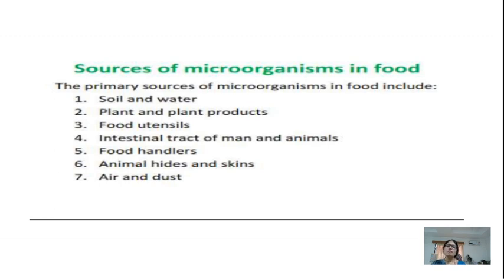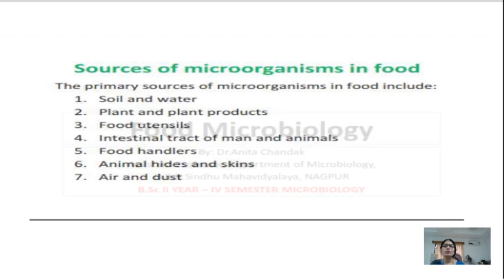Next are the sources of microorganisms in food. We know that food is spoiled due to microorganisms, but from where do these microorganisms come? They come from soil and water, plants and plant products, and food utensils. For example, the utensils a milkman uses may contribute to food spoilage. Other sources include the intestinal tract of humans and animals — if sewage contamination is present — as well as food handlers, animal hides and skin, and air and dust, which also contribute to food spoilage.